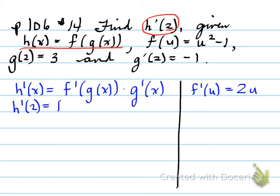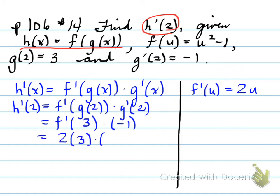So, plugging in, we get h prime at 2 is equal to f prime of g at 2 times g prime at 2. Do we know anything here? Well, we know g at 2 is 3. We know g prime at 2 is negative 1. So, let's fill it in. We get f prime at 3 times negative 1. So, what does f prime at 3 mean? Well, we need to plug in 3 for u. So, this 3 gets plugged in with this u, and you get f prime at 3 is equal to 2 times 3 times negative 1, which gives us negative 6.